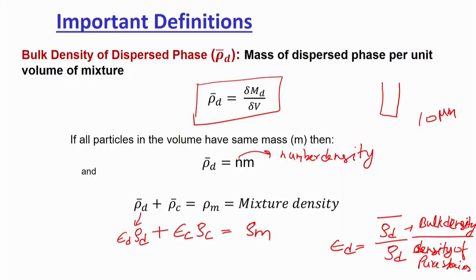Last time we were discussing the bulk density of a distribution. Bulk density is nothing but the mass of dispersed phase per unit volume of the mixture. Based on that, we defined the formula: rho_d bar = del·m_d / dou_v, where v is the volume of the mixture. It can also be written as rho_d bar = n × mass of a single particle, where n is the number density.